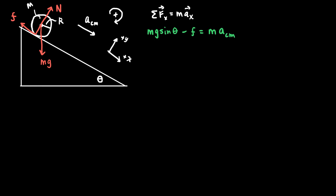Next, we write the net torque equation, which equals the rotational inertia I multiplied by angular acceleration α. The friction force is the only force that causes a torque on this object. Because it acts 90 degrees from the lever arm — which equals the radius R — the torque is simply R times F, and that equals I times α.